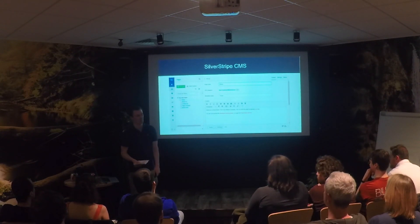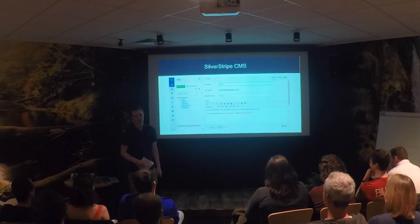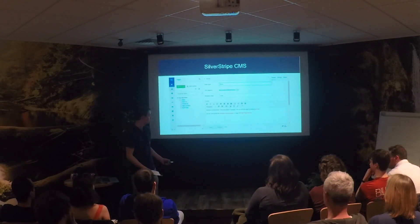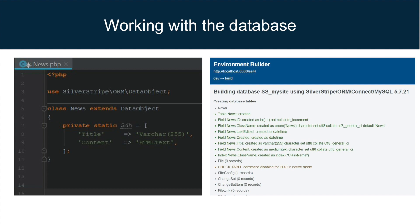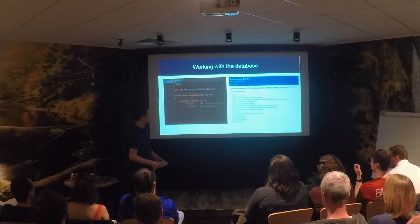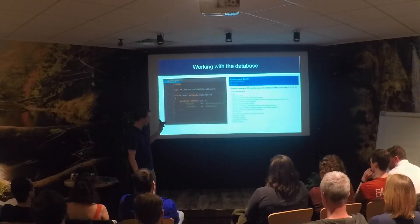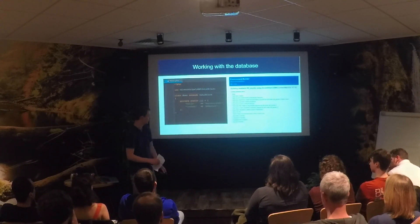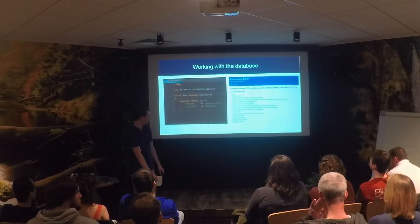If you want to do some custom development, I've got some screenshots here just to show you how rapid and easy it is to create a project in SilverStripe. This here is an example of working with the database — we're creating a news table with fields title and content. With just those 11 lines of code, you can run a dev build, which is SilverStripe's mechanism for updating or creating any changes you've made. You can see the output: it's creating the table and adding the ID, class name, last edited, and created fields, because all data objects in SilverStripe get those fields, and then it creates the title and content fields.